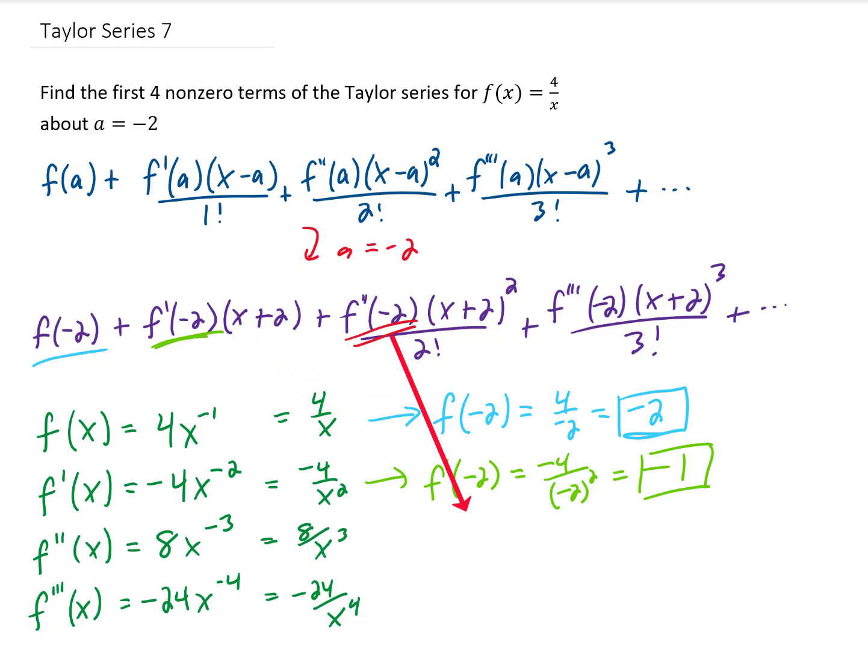Next, we need f double prime of negative 2. So down here in our f double prime function, we're going to plug negative 2 in, and we're going to get 8 over negative 2 cubed, which is another negative 1. And one more, f triple prime of negative 2. I'm getting negative 24 over negative 2 to the fourth power. That's going to give us negative 24 over 16, which reduces to negative 3 halves.